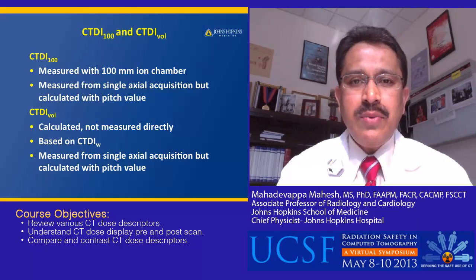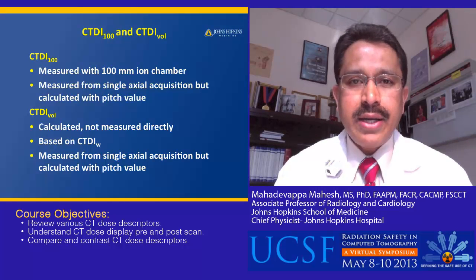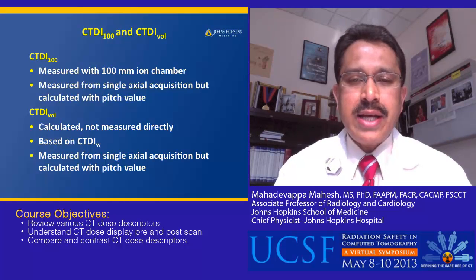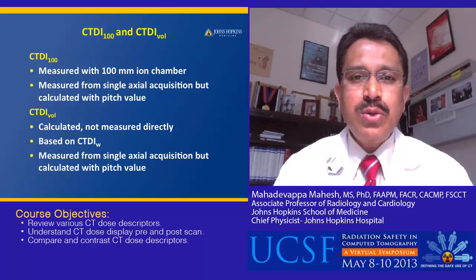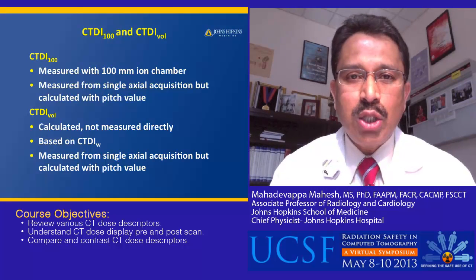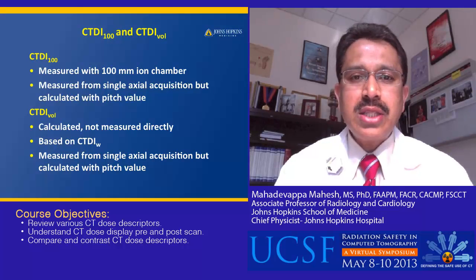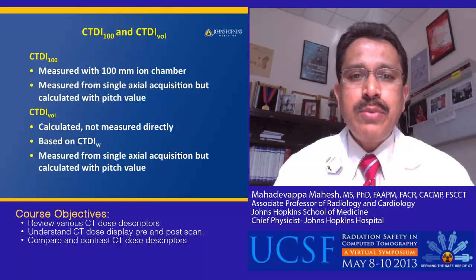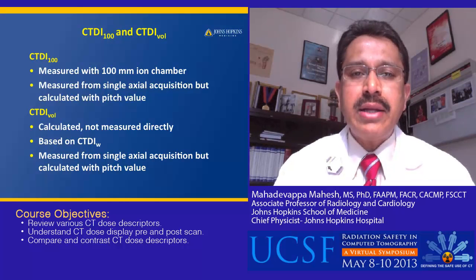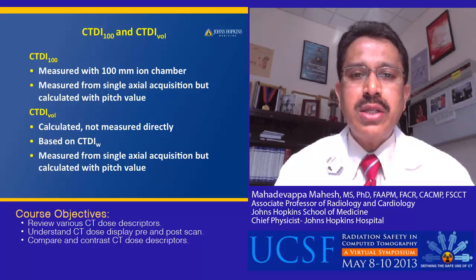Commonly we measure CTDI using a 100 mm ion chamber, noted as CTDI100. It is used in standard phantoms to measure the dose index number, or the scanner output, both at the center and at the periphery. From this measurement, we calculate CTDIvol, which is not a direct measurement on the patient but a measurement done on the phantom.